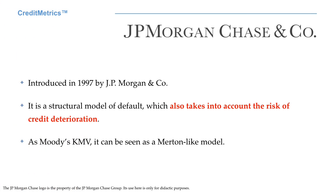CreditMetrics was introduced in 1997 by J.P. Morgan, now J.P. Morgan Chase. It is a structural model of default which also takes into account the risk of credit deterioration. Do you remember the second component of credit risk? From a mathematical point of view, CreditMetrics can be seen as a Merton-like model.